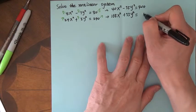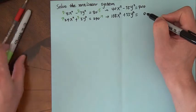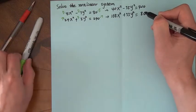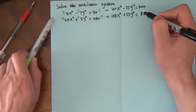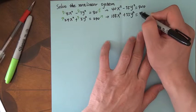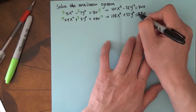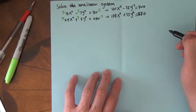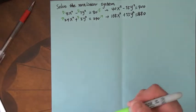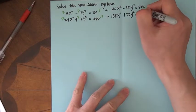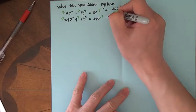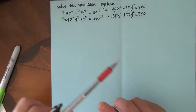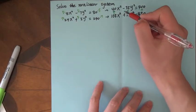And then here, 240 times 7. 0 times 7 is 0, 4 times 7 is 28, and 2 times 7 is 14 plus 2, that's 1680. Then we can add, and those two will be cancelled.